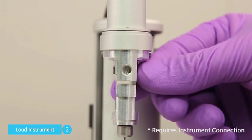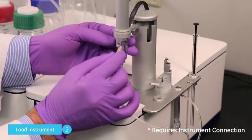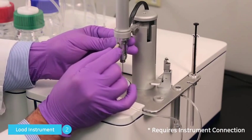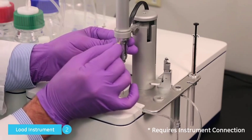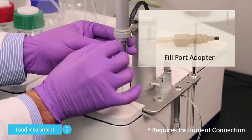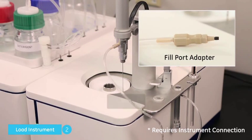Align the hole in the pipette's rotating assembly to the hole in the pipette housing. Insert the FPA. You should feel a soft click. Click Next.